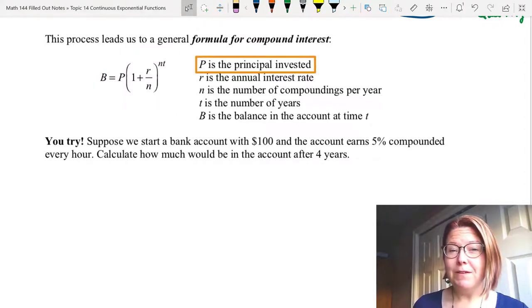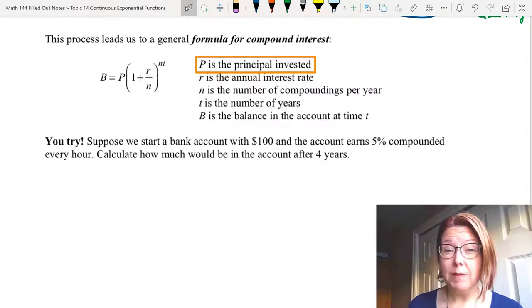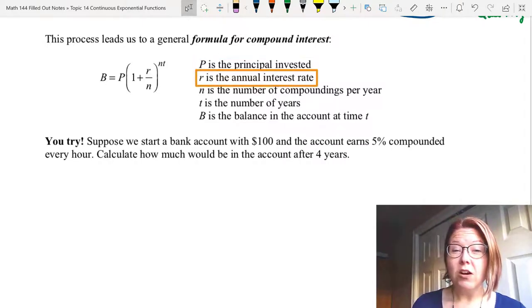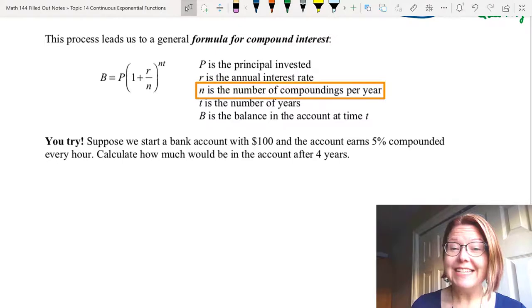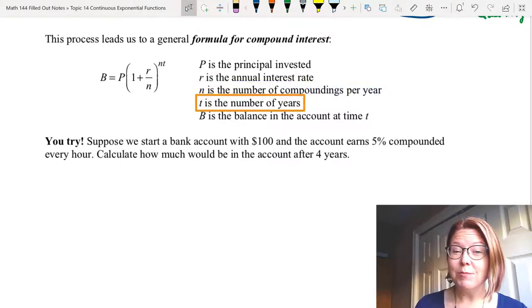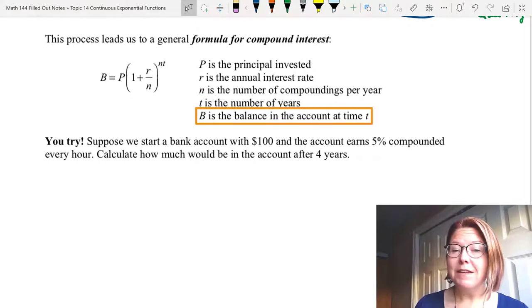P is the principal invested. That's how much we start with in the bank account. Lowercase r is the annual interest rate. Lowercase n is the number of compoundings per year. Lowercase t is the number of years. And capital B is the balance in the account at time t.